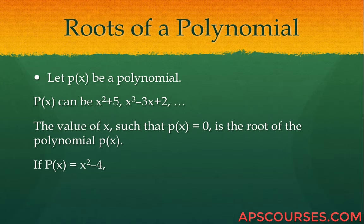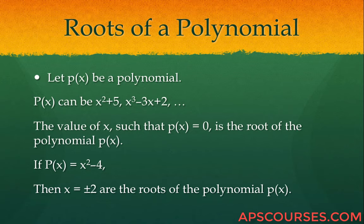So if P of x is equal to x squared minus 4, then x equals plus or minus 2 are the roots of this polynomial.